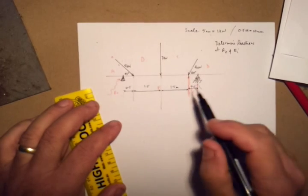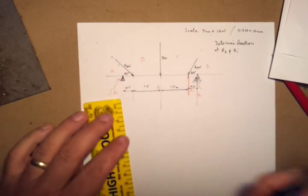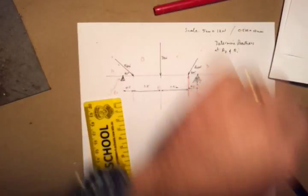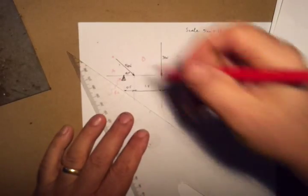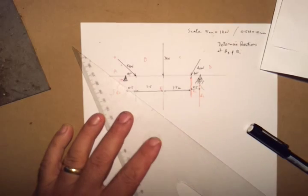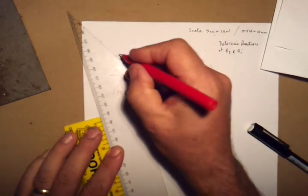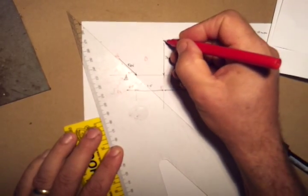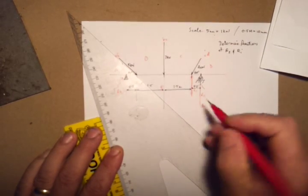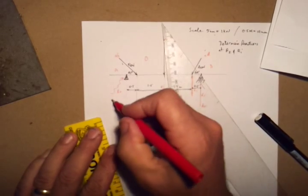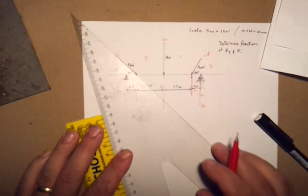Alright, so the first thing to do, we've labelled everything, we've organised our scale system, we've stated that, is to draw our force polygon. The force polygon will be started systematically, we'll go from left to right, and we'll begin with force AB here. So that's vector AB, this one vector BC, this one vector CD. This R reaction will be DE, and the last reaction over here EA.